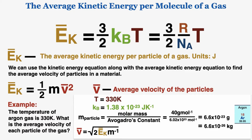This is the equation for the average velocity — I rearranged the average kinetic energy equation. Substituting in 3/2 times Boltzmann's constant times temperature for the kinetic energy, and plugging in all the known values, I get a final answer of 455 meters per second.